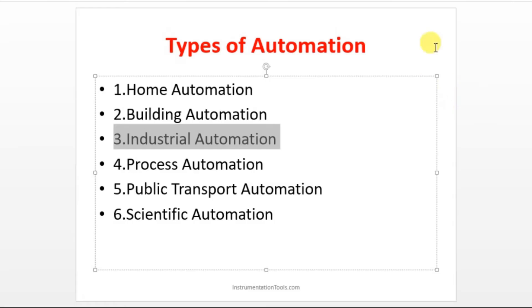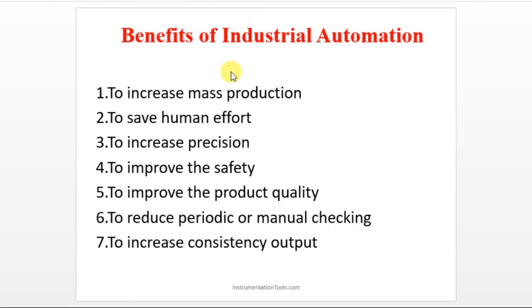Now let's move on to the benefits of industrial automation. The main purpose of automation is for industry, because the key goal is to increase production. Industries are our backbone, so you will find more automation usage in industry. In our course we are going to study more about industrial automation. Industrial automation refers to devices or systems implemented in an industry to increase production, ensure safety, and replace human operators.